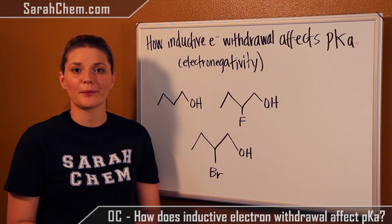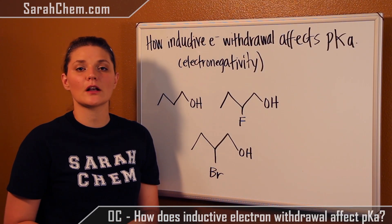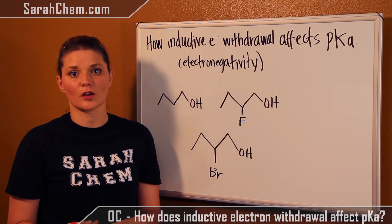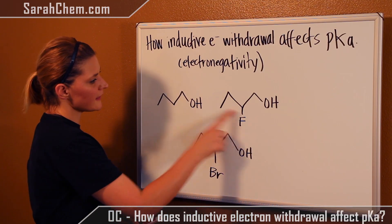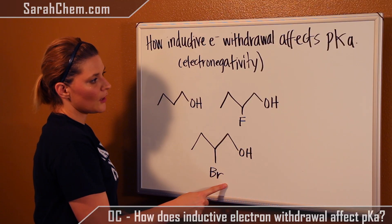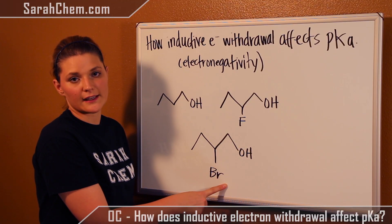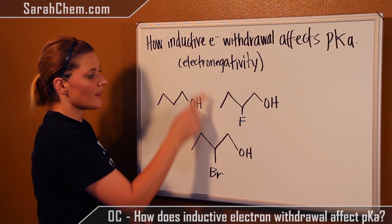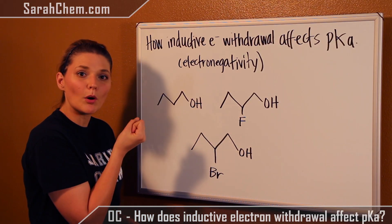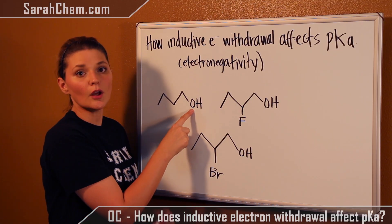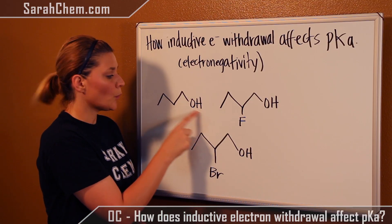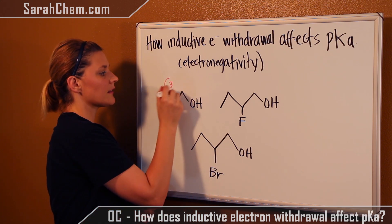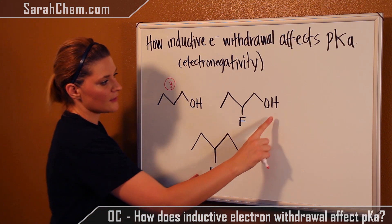So let's take a look at this first example. We're going to focus on the electronegativity of the atom that will be able to inductively electron withdraw. We have these three compounds and we want to rank them from most to least acidic. Looking at this first compound, unlike the others, there is no atom that could help pull at the negative charge that would develop on the oxygen once the hydrogen left. Which means there's nothing to stabilize it, so this would have to be the least acidic of the bunch.